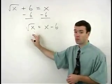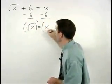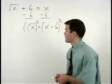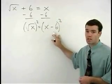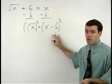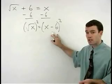Next to get rid of the radical we square both sides of the equation and notice that on the right side of the equation the x minus six squared must be thought of as x minus six times x minus six.